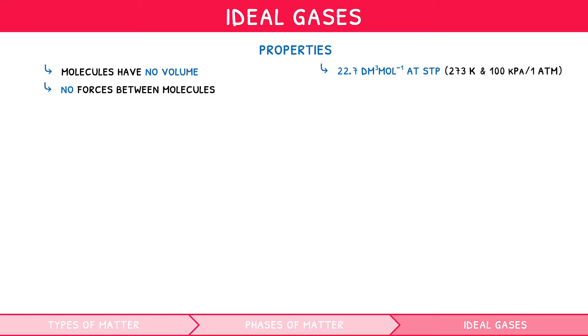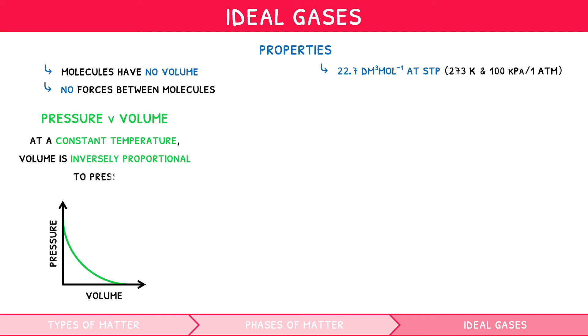When exploring ideal gases, there are several relationships that you need to be aware of. The first relationship is that of pressure versus volume. A fixed mass of an ideal gas at a constant temperature has a volume inversely proportional to pressure, i.e. as volume increases, the pressure will decrease. This is because as volume increases, particle concentration decreases, causing fewer collisions with the container, decreasing the pressure.